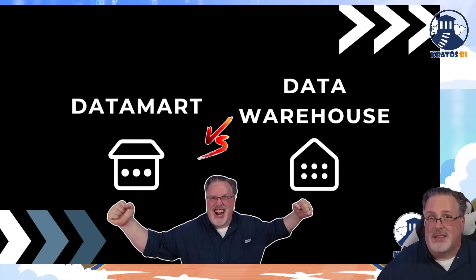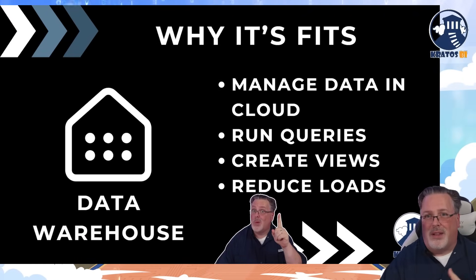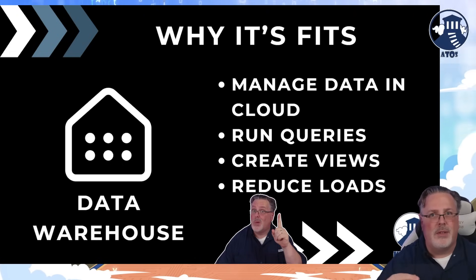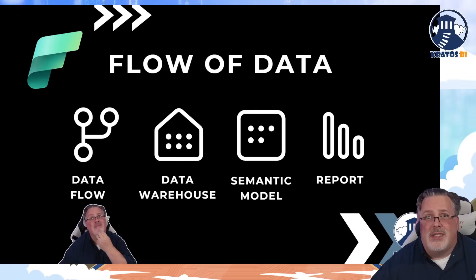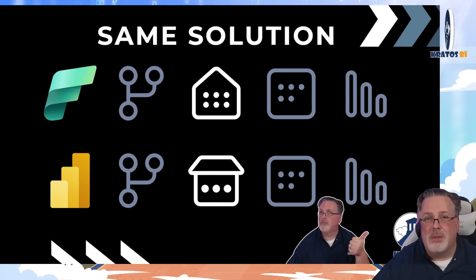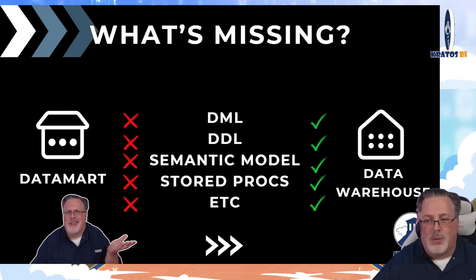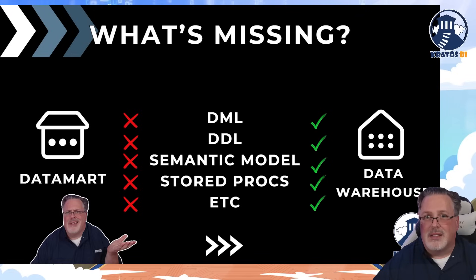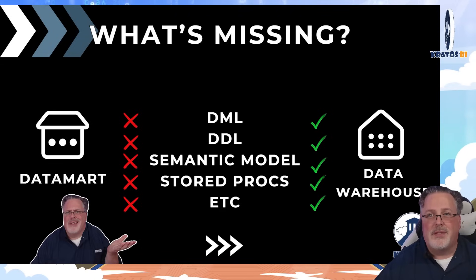That leads us to: which one should we really be using? Data warehouse is a big contender. It allows you to do everything the data mart allows — manage data, run queries, create views, reduce loads. The flow of information is the same: data flow → data warehouse → semantic model → reports. But when you line them up side by side, DML objects work in warehouse, not in data marts; DDLs — got them in warehouse, not in data marts; semantic models, stored procedures — on and on. All of that is available right now in data warehouses and not in data marts.